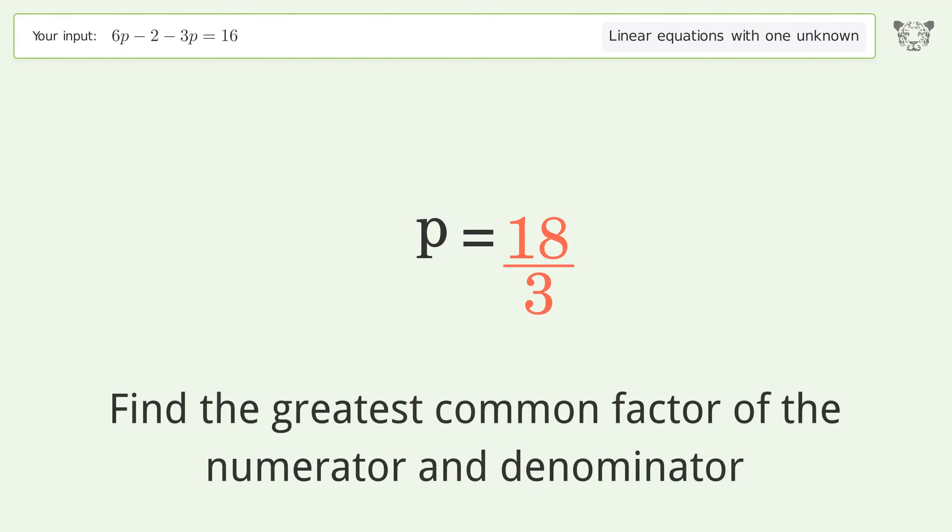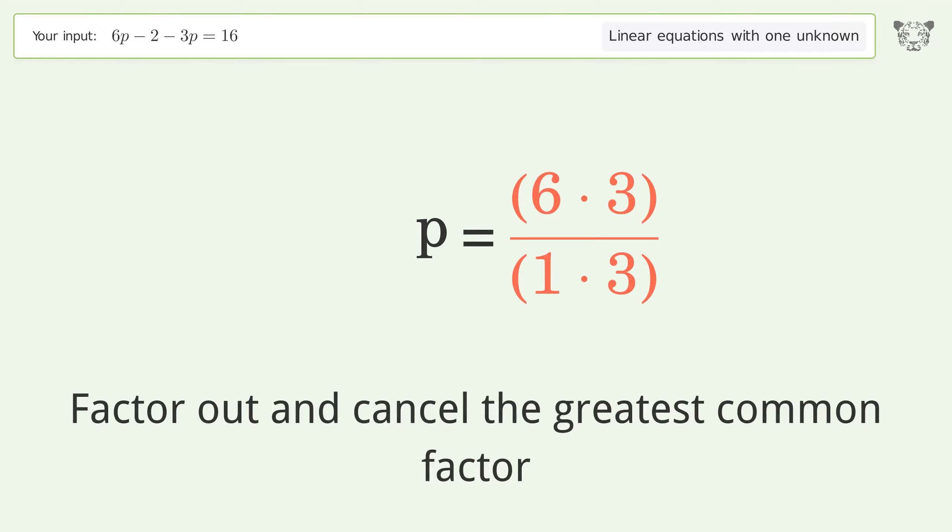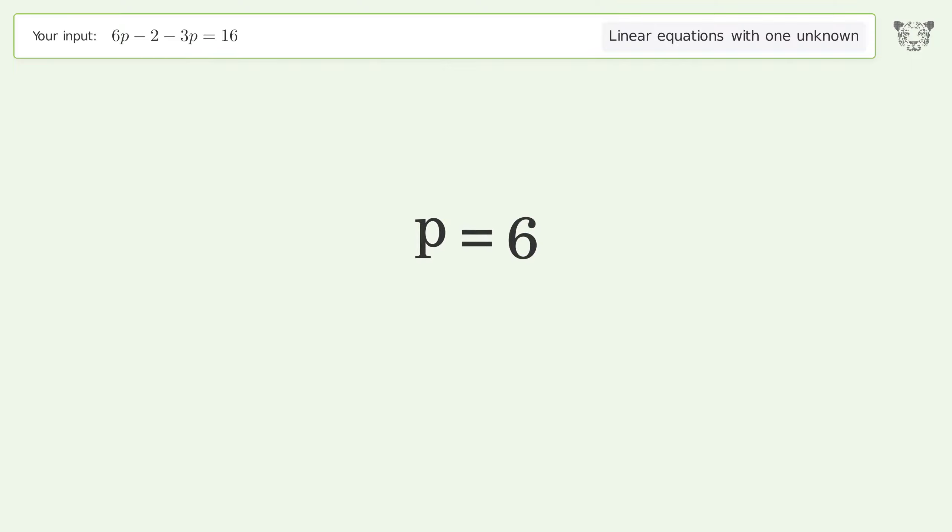Find the greatest common factor of the numerator and denominator. Factor out and cancel the greatest common factor. And so the final result is p equals 6.